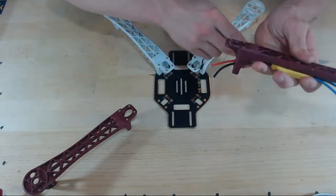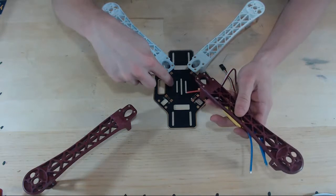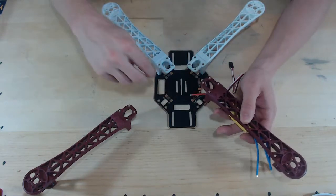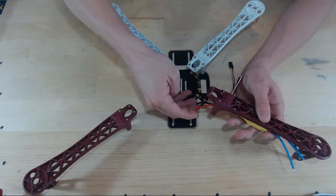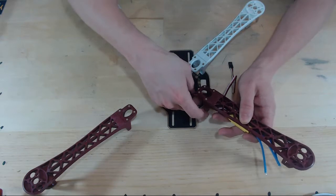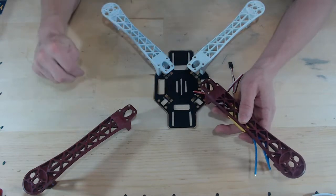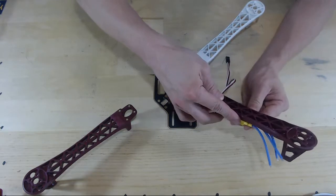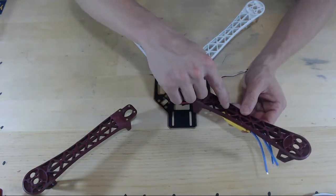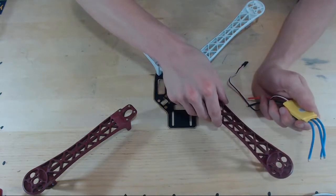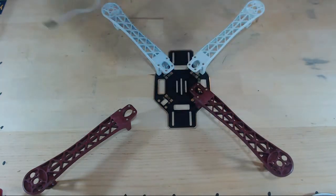Now with our build, since we have our power distribution board conveniently placed here, if we have our ESCs on the bottom like this, then we have our wires easily exposed already to be able to solder to the electrodes of the power distribution board. So on our build, I think we're going to put the ESCs on the bottom of each arm, and we'll just zip tie those in. That takes care of the ESCs.